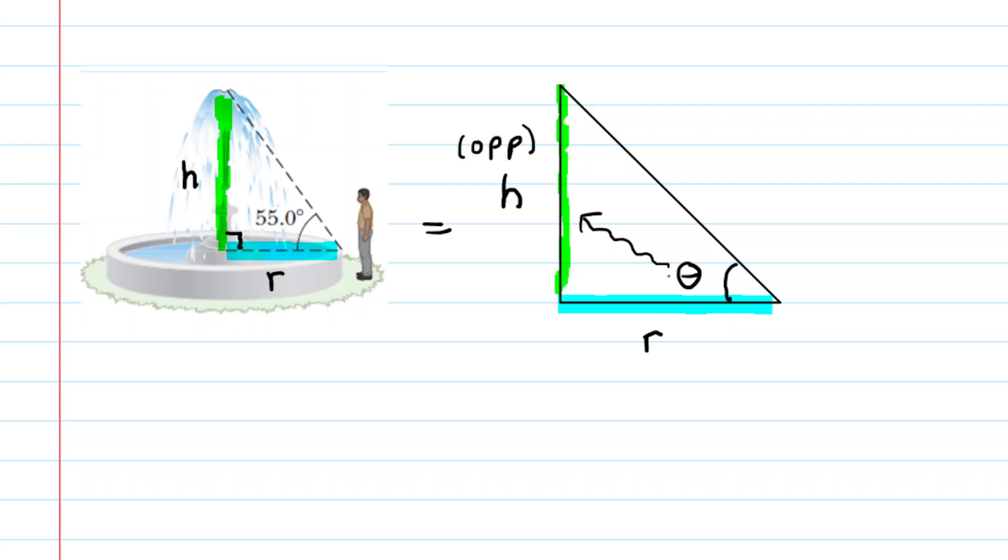And then if you look at where the radius is positioned, you'll notice that the radius is positioned adjacent to that angle. So we'll label that accordingly as well.